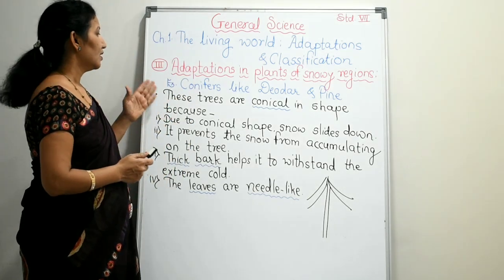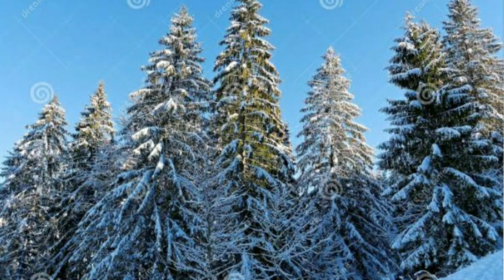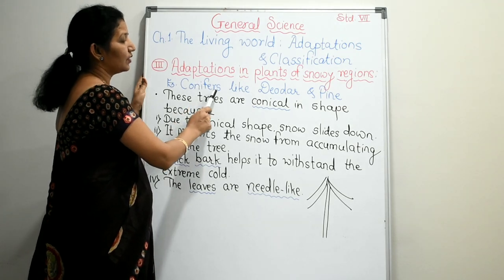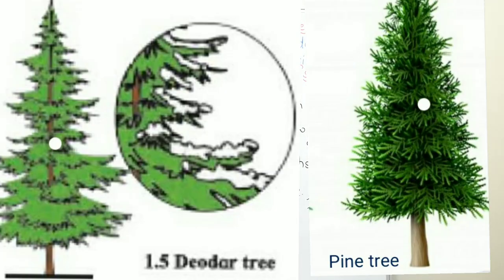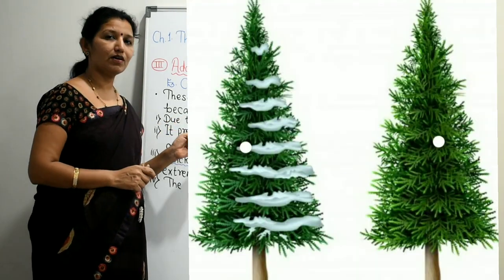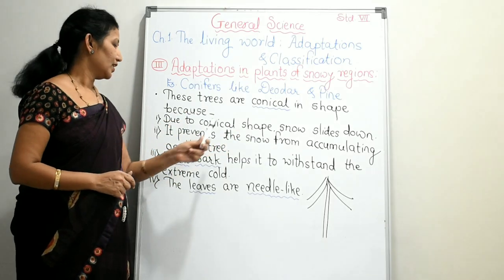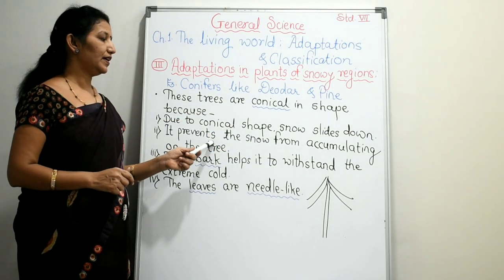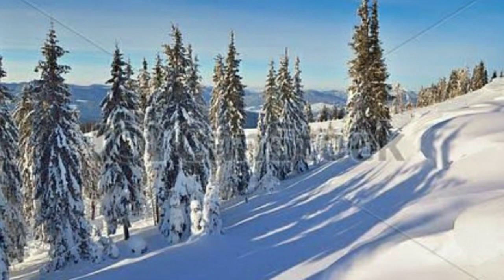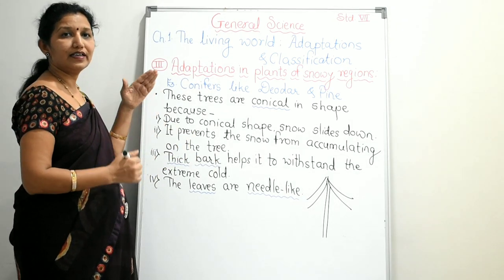The shape of the plants in snowy regions is conical, and because of that conical shape, they are called conifers. Examples are Devdar and Pine. These trees are conical in shape so that the snow slides down the trees, preventing the snow from accumulating on them.